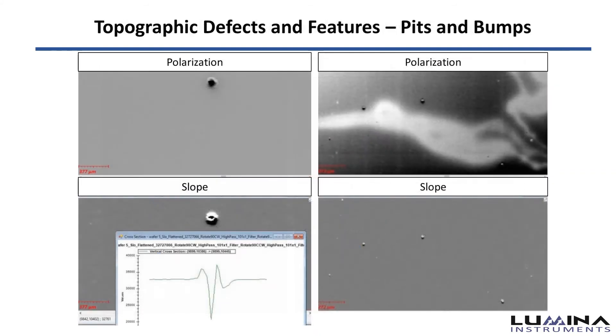Another topographic defect and feature are pits and bumps. By looking at the slope channel signal sign through the defect, we can determine if the defect is a pit or a bump. Since the slope channel has a negative sign in this example, we know this is the pit.